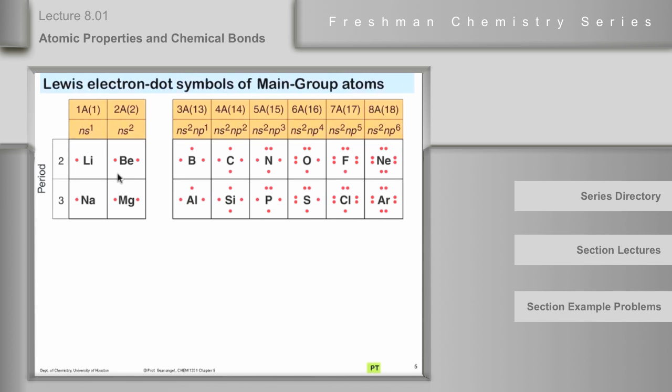Now here is the pattern for the main group atoms. And you can see from this the pattern that I was talking about. One single dot for group 1A, two single dots for 2A, three single dots for 3A, and four single dots for 4A. And then we start to pair. 5A has one pair and three singles, 6A has two pairs and two singles, and 7A has three pairs in one single, and then of course with 8A we have four pairs.